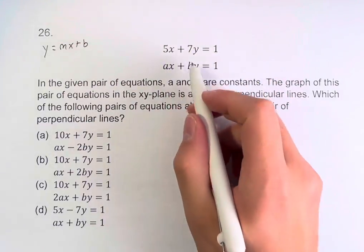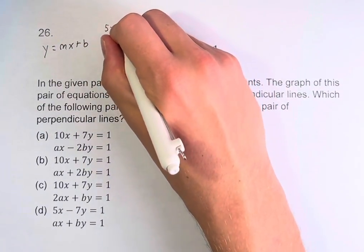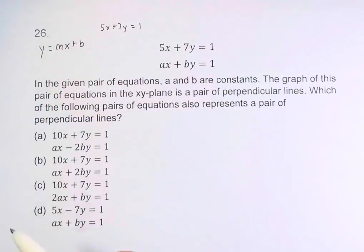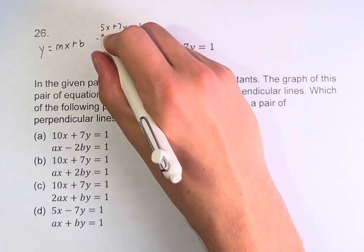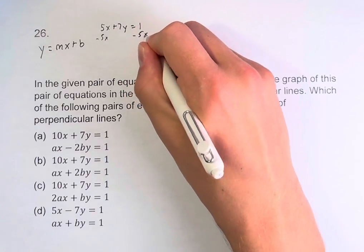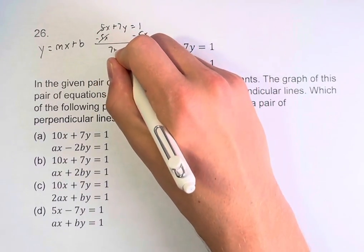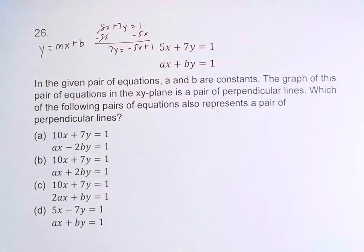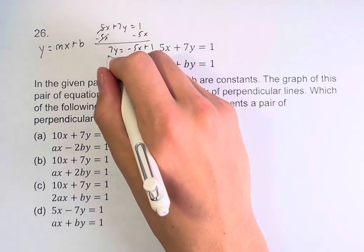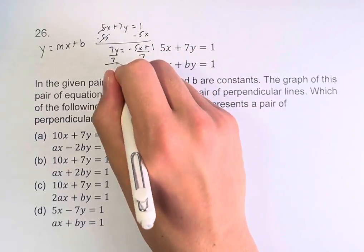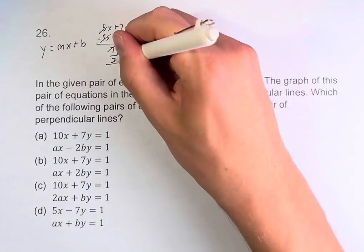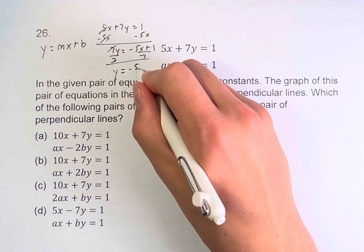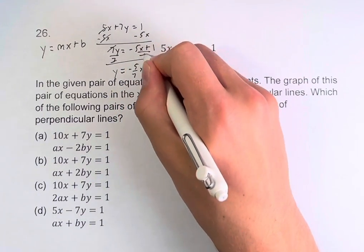For 5x plus 7y equals 1, we want to get y on its own. We subtract 5x from both sides — these cancel — and we're left with 7y equals negative 5x plus 1. Now we divide both sides by 7. The 7s cancel and we get y equals negative 5 over 7, x minus 1 over 7.